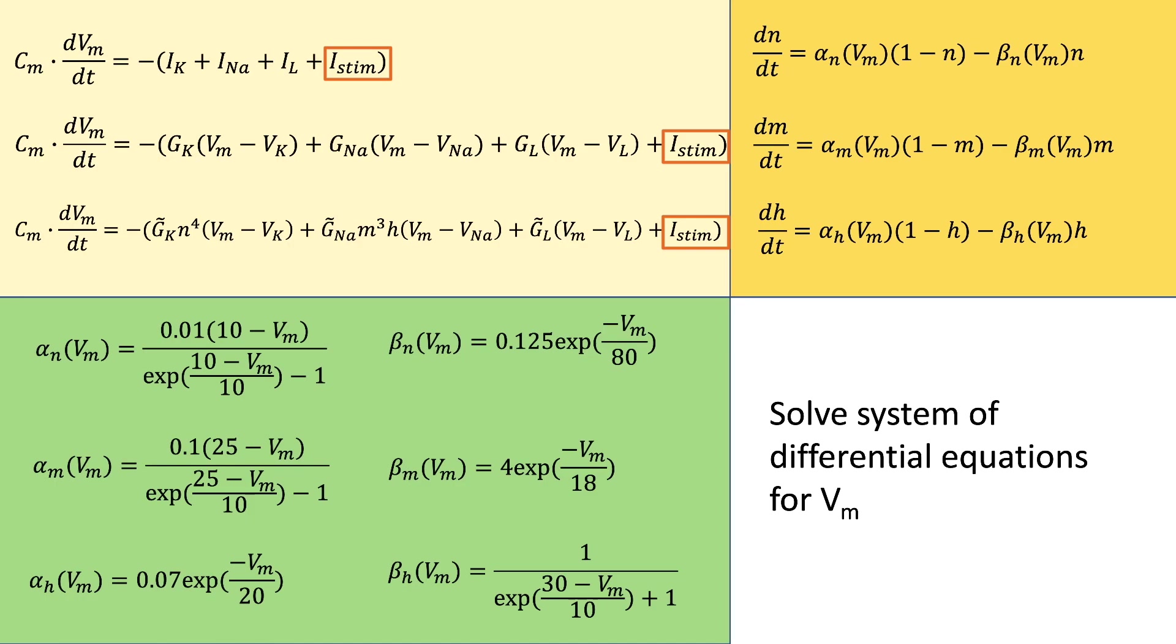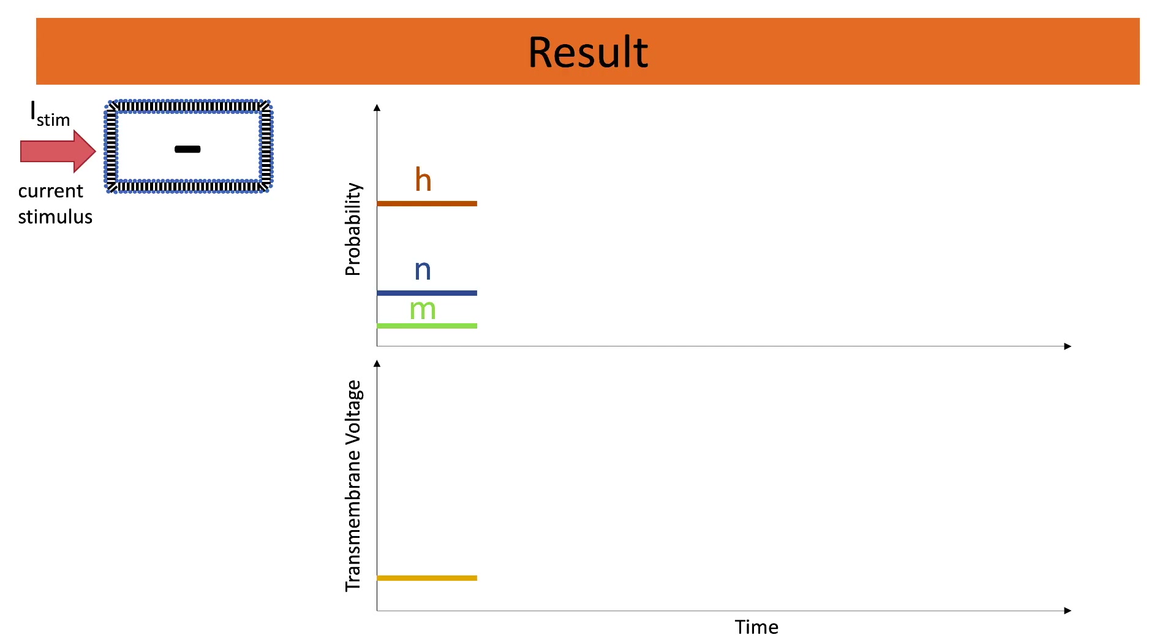Now using this we have all our formulations and we can solve this system of differential equations for VM. We can do this using Euler's method or Runge-Kutta, for example. If we solve this we see again the steady state.